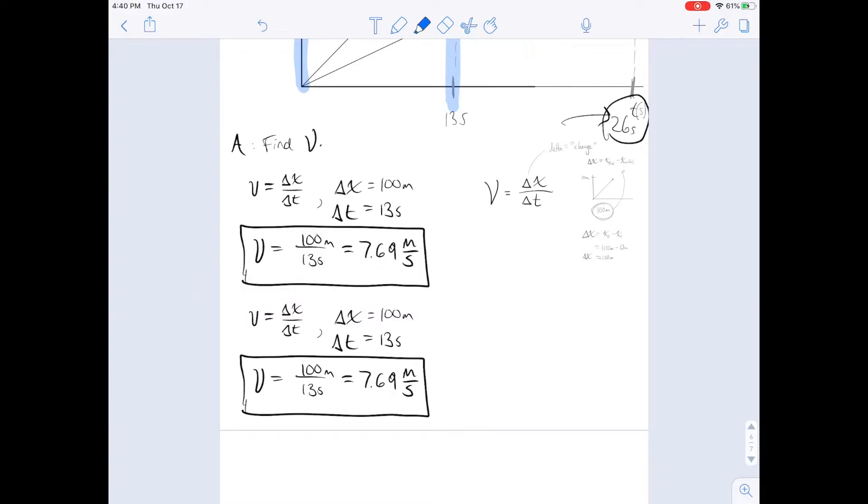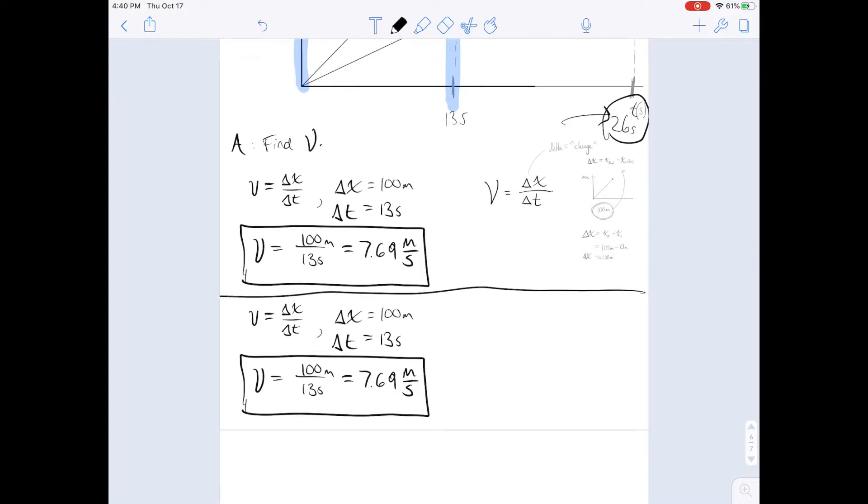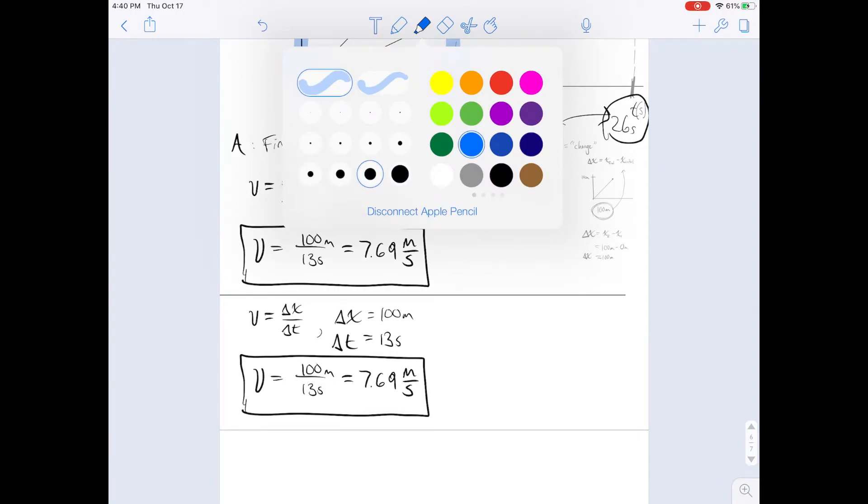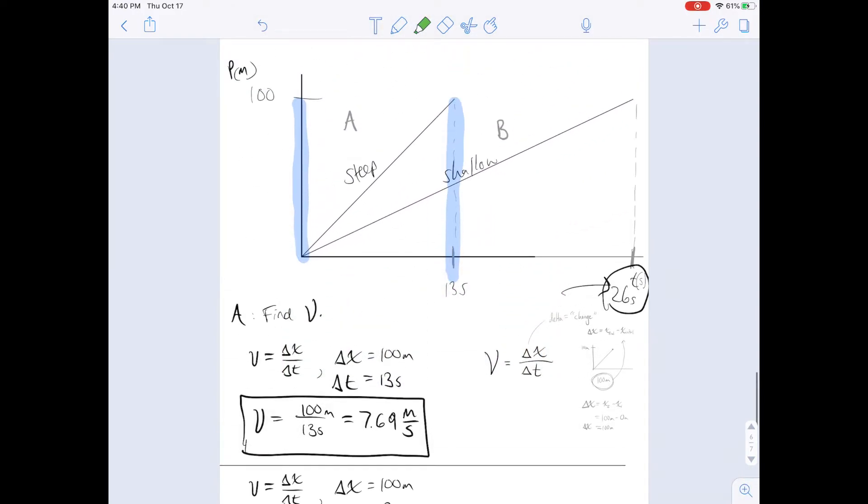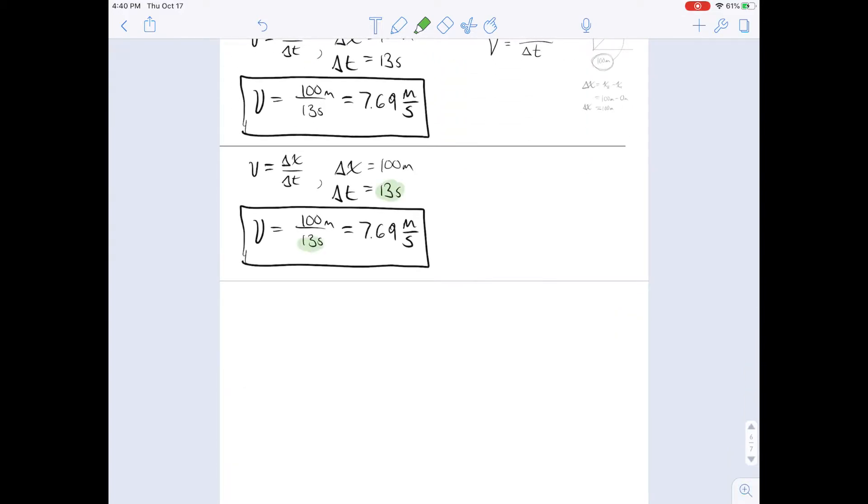All we're doing is we're looking for the numbers that changed. And in this second scenario for B, we can see that the position, the change in position, is the same. I should use a different color because we're still going to 100 meters, but this time we're going in 26 seconds instead of 13 seconds. So really the only thing that changed is this.